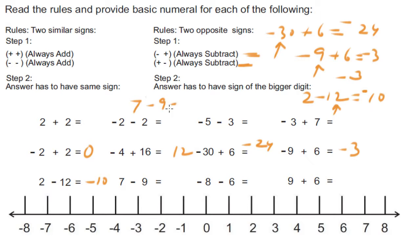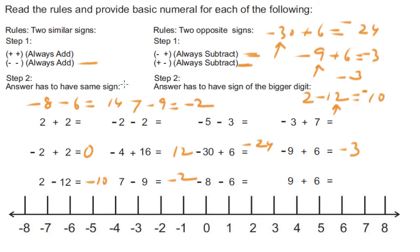Seven minus nine: two opposite signs, we subtract. Nine minus seven is two, and nine is the bigger digit, so this should be negative two. Negative eight minus six: two similar signs, we add. Eight plus six is fourteen, and the answer has to have the same sign, so this is negative fourteen. Nine plus six: both are similar signs, both positive. Nine plus six is fifteen, and this is positive fifteen.